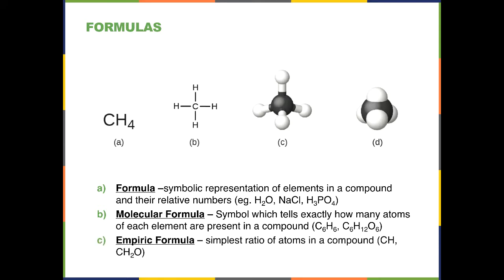The empirical formula is the simplest ratio in a compound. For example, benzene's simplest ratio is one-to-one, so its empirical formula is CH. For glucose, its simplest formula is CH2O, because there is one carbon for every two hydrogens for every one oxygen.